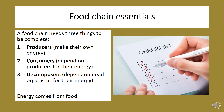A food chain needs three things to be complete. There needs to be producers, who make their own food; consumers, who depend on producers for their energy; and finally decomposers, who depend on dead organisms for their energy.